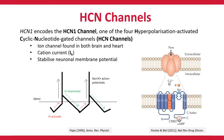HCN channels pass a cation current, which in neurons is known as IH, and it's carried primarily by sodium, although these channels can also pass potassium and a small amount of calcium. One of the key roles of HCN channels is that they stabilize the neuronal membrane potential, as summarized in the image on the left-hand side of this slide. Briefly, when a neuron becomes too negatively charged or hyperpolarized, HCN channels open, and when a neuron becomes too positively charged or depolarized, HCN channels close. This modulates the amount of sodium that flows into the cell, and therefore helps to return the cell back towards rest.